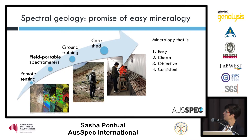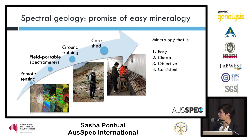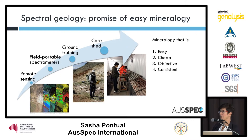Where did it all start? Spectral geology really started in the 70s and 80s with the growth in remote sensing, where we had the Landsat satellites up there. As part of that, people developed field portable spectrometers to go down on the ground and do ground truthing, so they could actually look at the responses of the material they were detecting in the remote sensing images and understand more about what was happening on the ground.